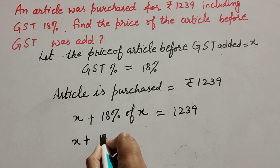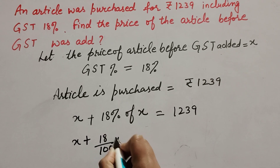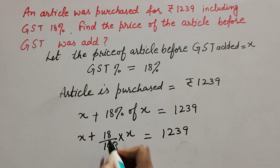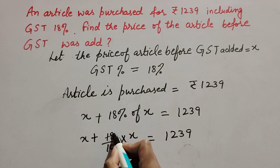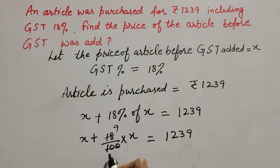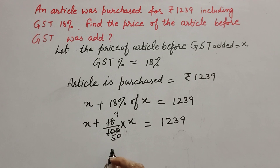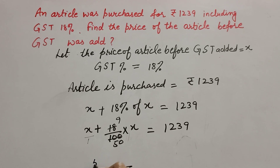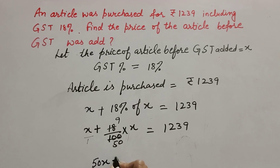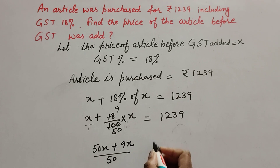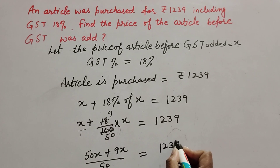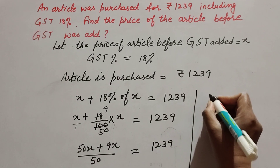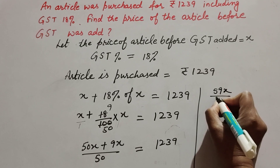x plus 18 over 100 multiplied by x equals 1239. 18 and 100 are both divisible by 2, so we cancel them: 9 and 50. Taking the common denominator of 50, we get 50x plus 9x over 50 equals 1239.